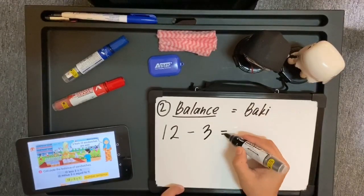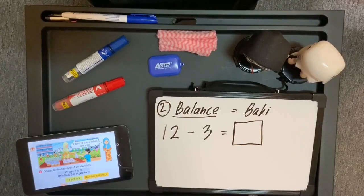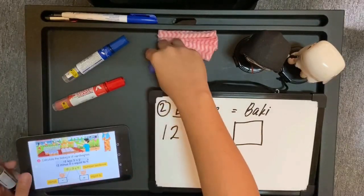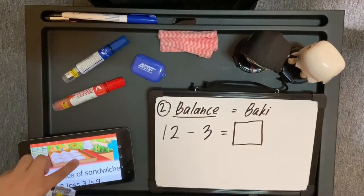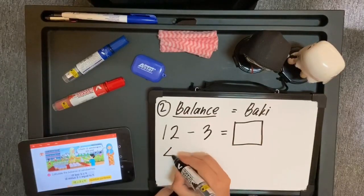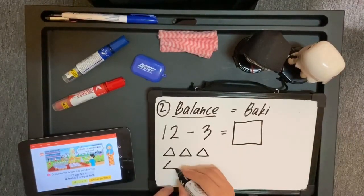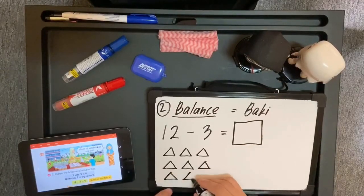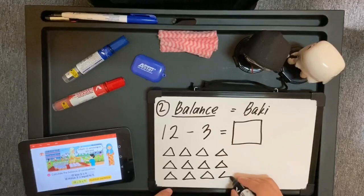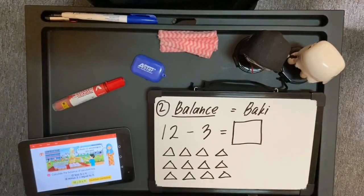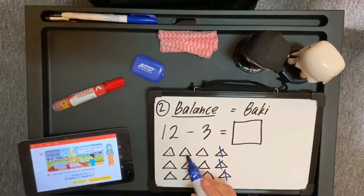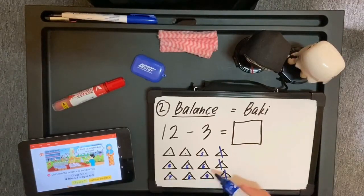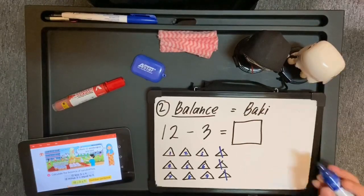Tolak 3 yang dijual. Berapakah sandwich yang tinggal? Soalan ni boleh rujuk dalam gambar. Kalau nak tengok yang tinggal, ada 1 hingga 9. Untuk pengiraan, kita boleh juga lukis 1 hingga 12. Bila dijual, benda tu dah tak ada. Jadi, boleh potong 1, 2, 3. Berapa yang tinggal? 1, 2, 3, 4, 5, 6, 7, 8, 9. Jadi, baki sandwich yang tinggal ialah 9.